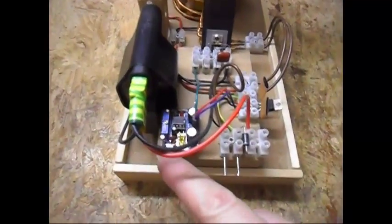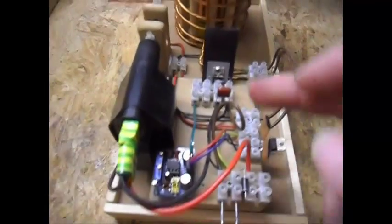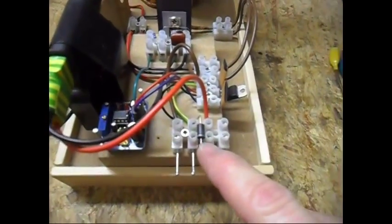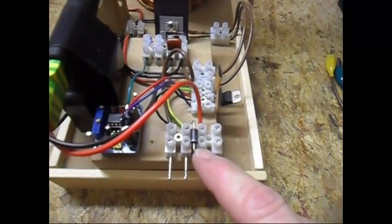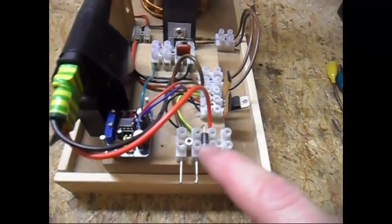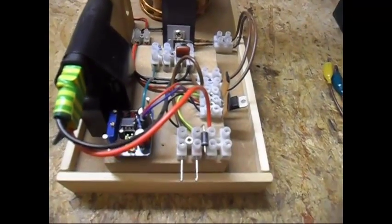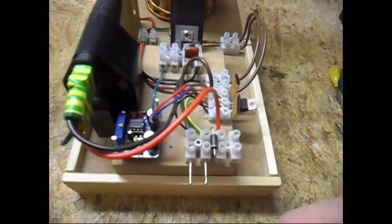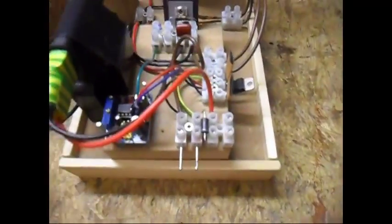Here I have a 555 timer to pulse the N-channel MOSFET. I have over here now a 10 amp 1000 volt diode. In the previous video I had 3 amp diodes, so this is much nicer and better.